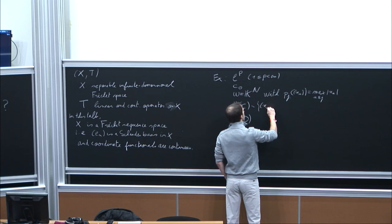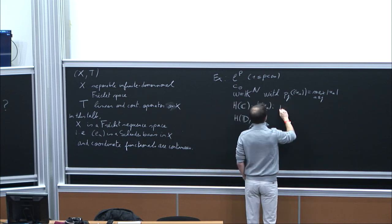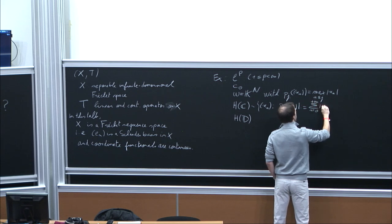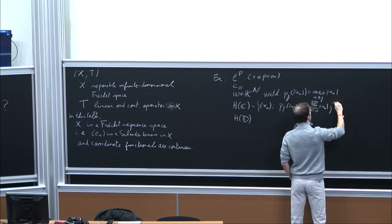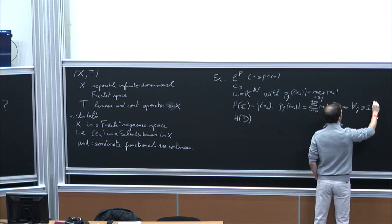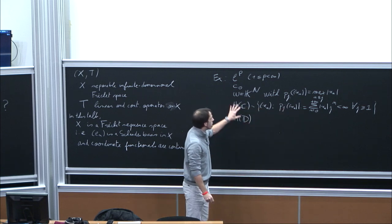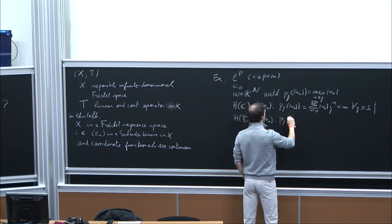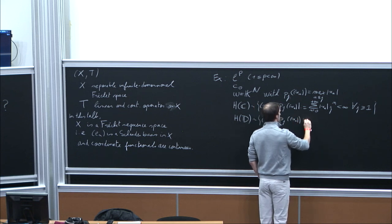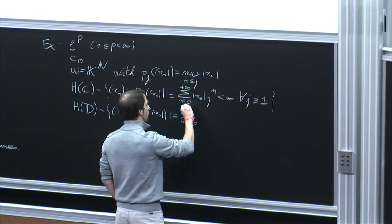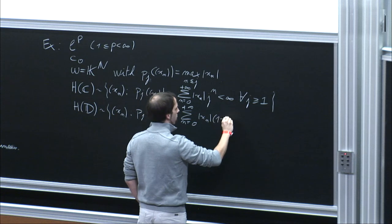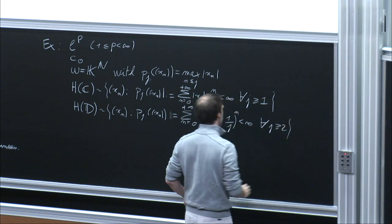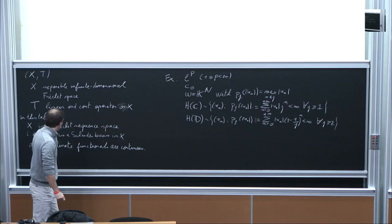We will also look at two other spaces: the space of holomorphic functions on the whole complex plane H(C) and on the unit disk H(D). We identify these spaces with Fréchet sequence spaces by considering Taylor coefficients. For H(C), this corresponds to sequences such that the series sum of |x_n| times j to the power n is finite for any j, with these as the semi-norms. For H(D), one considers (1 - 1/j) to the power n for any j greater than 2.